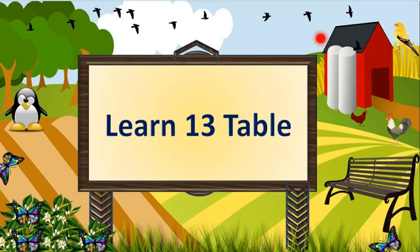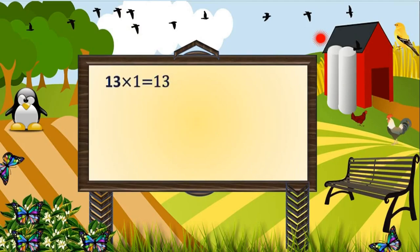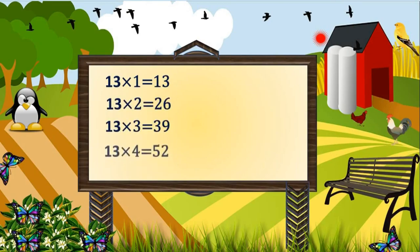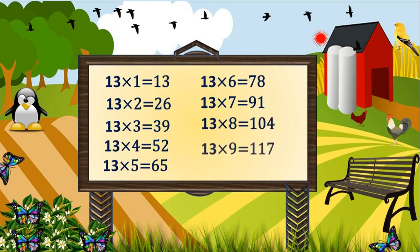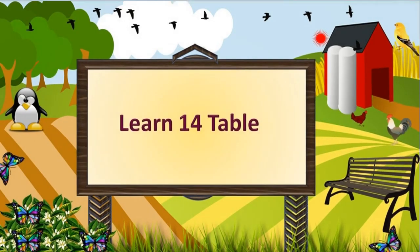Learn table of 13. 13×2 is 26, 13×3 is 39, 13×4 is 52, 13×5 is 65, 13×6 is 78, 13×7 is 91, 13×8 is 104, 13×9 is 117. Learn table of 14.